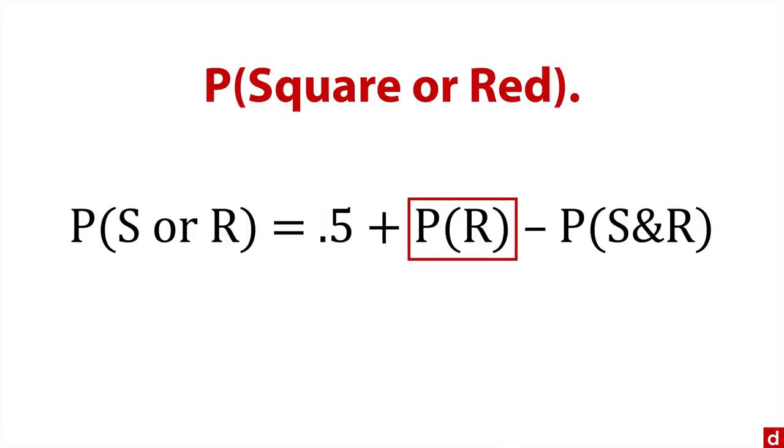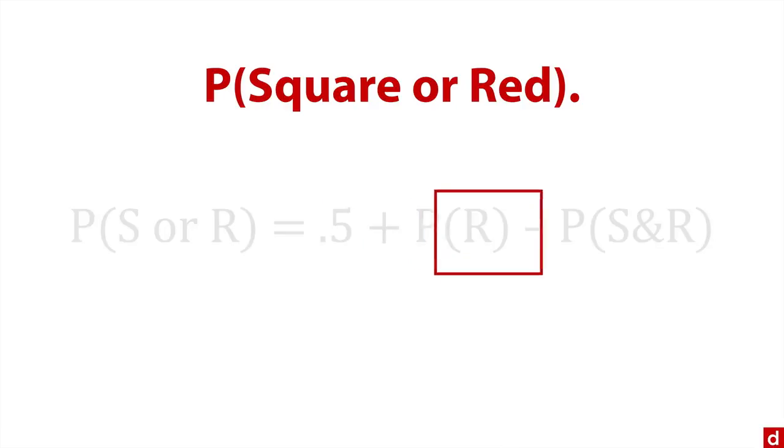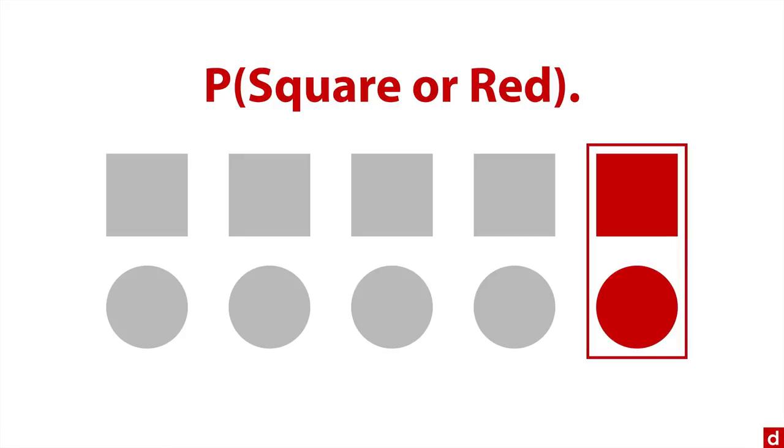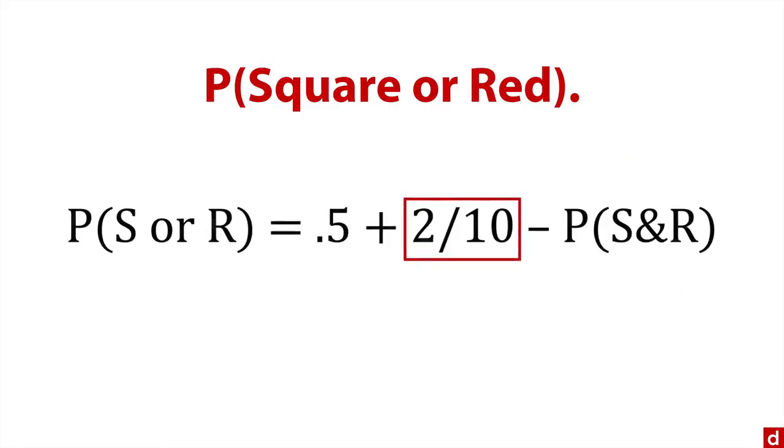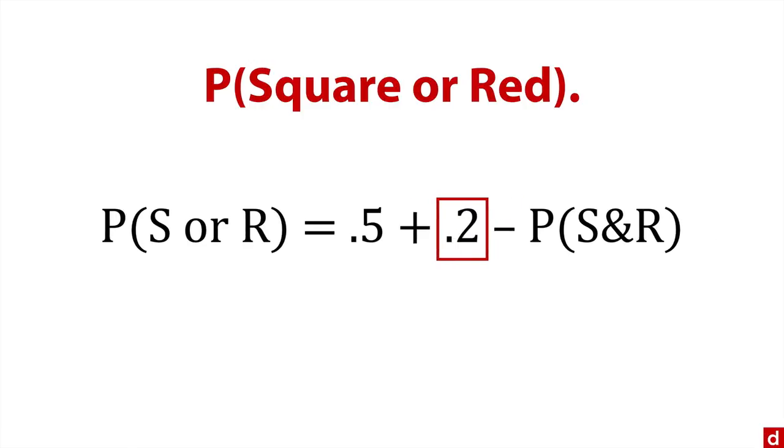Next, the probability of something red in our sample space. We have 10 shapes total, two of them on the far right are red. So that's 2/10, which equals 0.2.